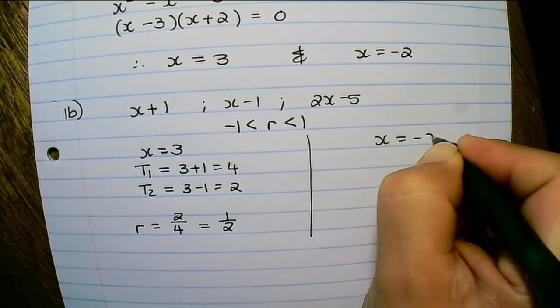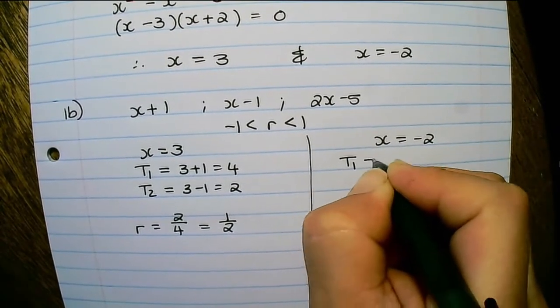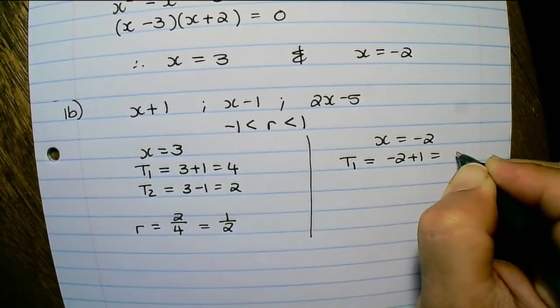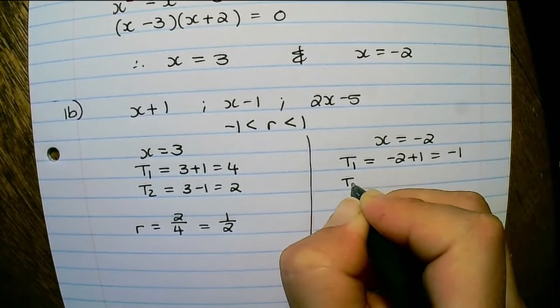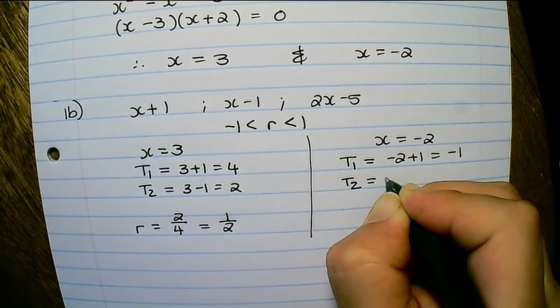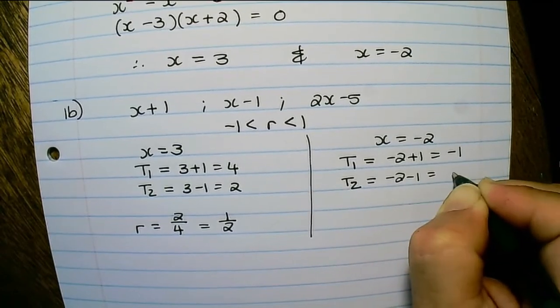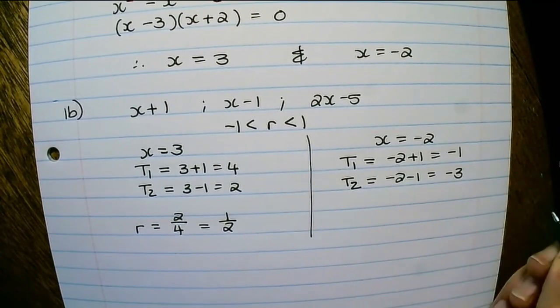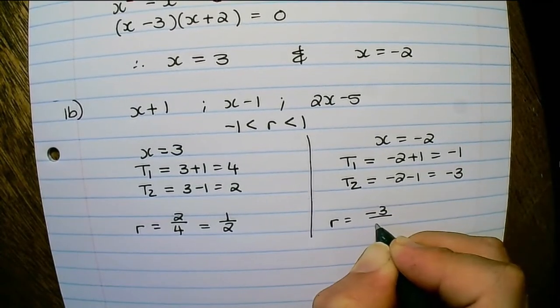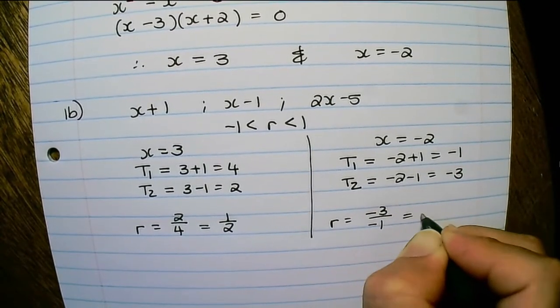Then for x equals to negative 2, I have the first term equals to negative 2 plus 1 which is equals to negative 1, and the second term as negative 2 minus 1 which is equals to negative 3. So now the ratio is negative 3 over negative 1 which is equals to 3.